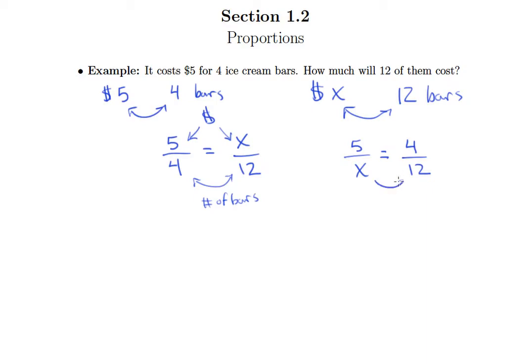Okay, and in this case, the corresponding items on the top and bottom are, on top we have the lesser amount, right? So the amount of money and the number of bars that go with the lesser amount, and the amount of money and number of bars that go with the greater amount. So that would be another way you could set this up.